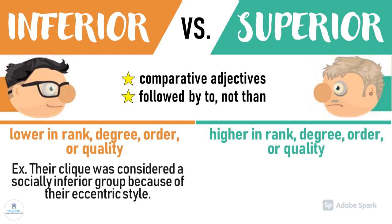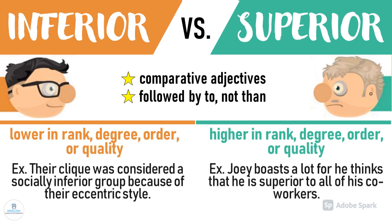Examples: Their clique was considered a socially inferior group because of their eccentric style. Joey boasts a lot, for he thinks that he is superior to all of his co-workers.